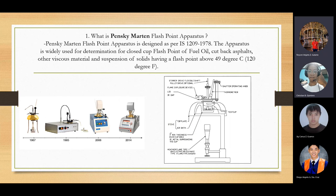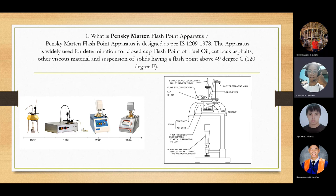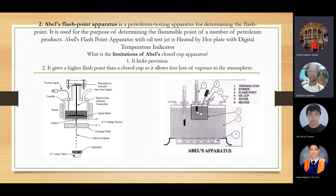Pensky-Martens flashpoint apparatus: Pensky-Martens flashpoint apparatus is designed as per IS 1209-1978. The apparatus is widely used for determination of closed cup flashpoint of fuel oil, cutback asphalt, other viscous materials, and suspensions of solids having a flashpoint above 49 degrees Celsius or 120 degrees Fahrenheit. Pensky-Martens determines the flashpoint of petroleum products in the 40 degrees to 370 degrees range.